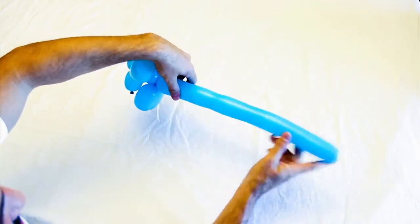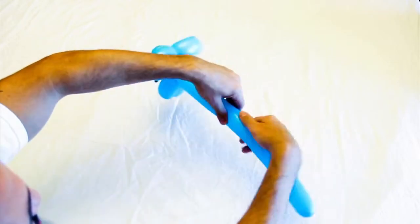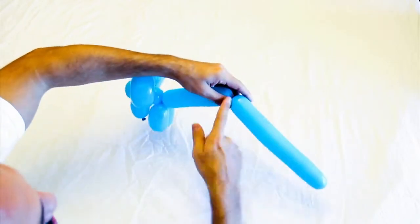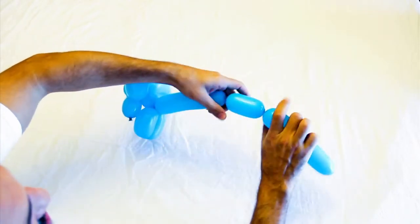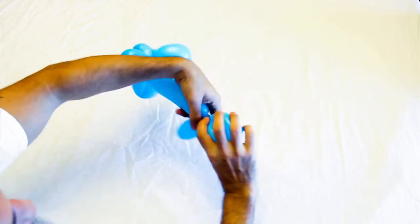What you have left is the body and the back legs, so you want to give them a long body. Twist, you're going to make another leg, fold this over, twist it together.